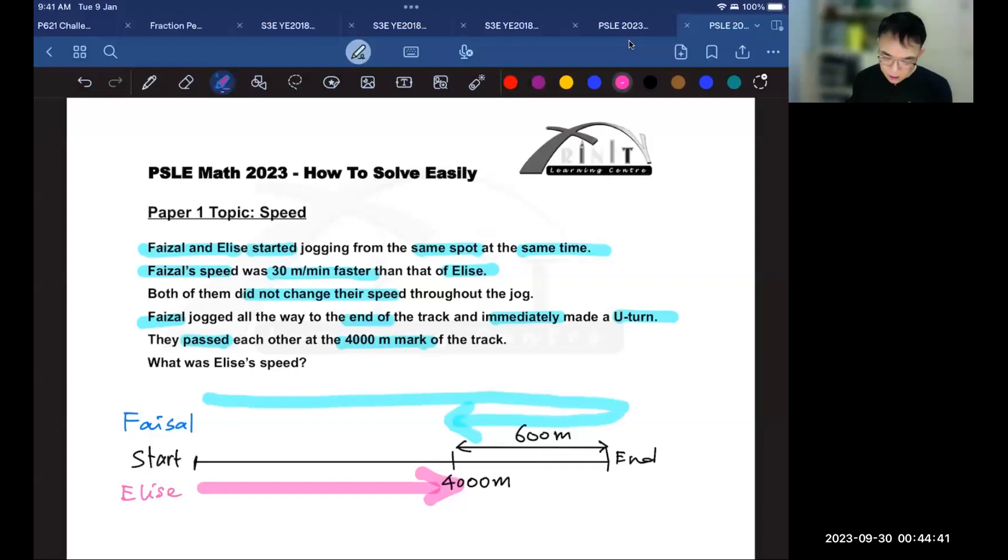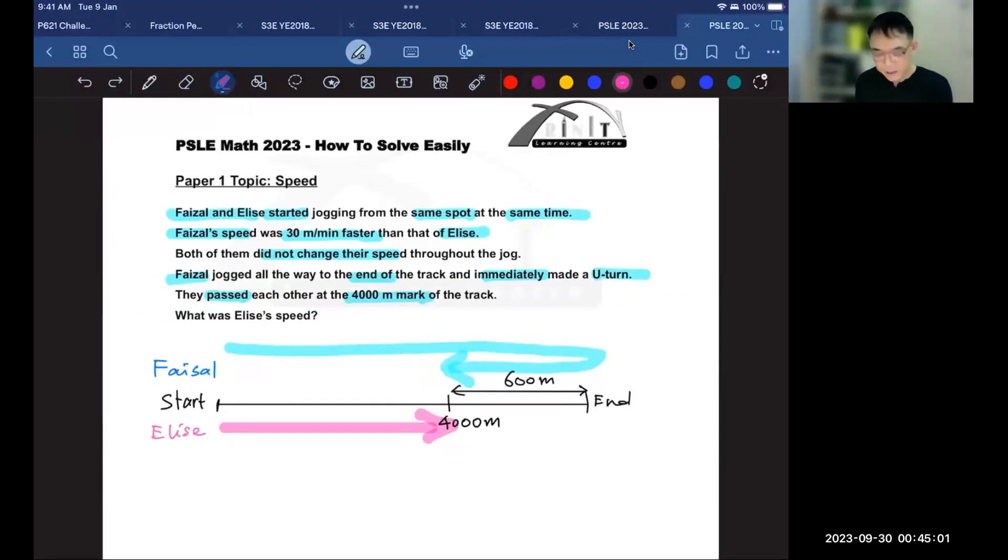Now, you can see here, there's a 600 meter as given in the question. My question to you is, what is the difference or the extra distance traveled by Faisal? Let's see if you were right.